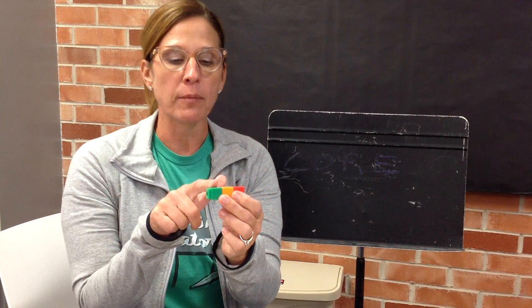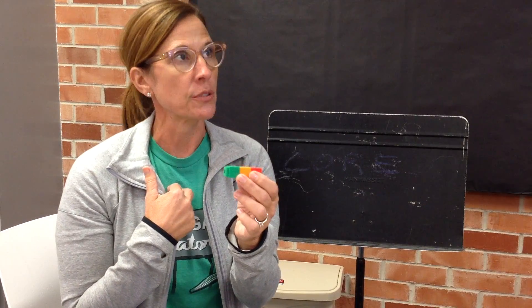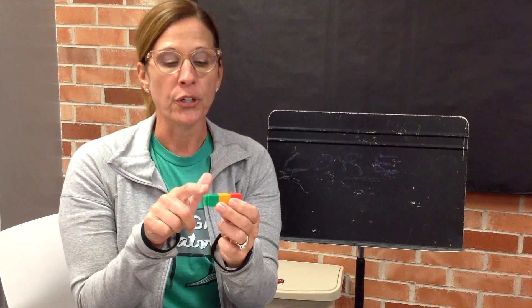You are going to practice blending sounds to make a word. Each time I tap a cube, I will say a sound. When I move my finger over the cubes, then you will say the word. I will model the first two. My turn. B-L. Word. Bell. R-O-C. Word. Rock.